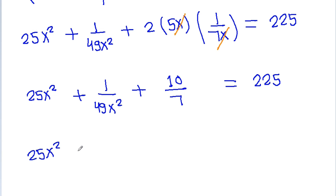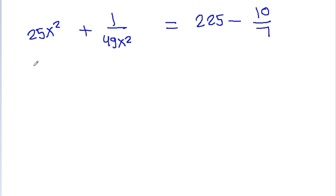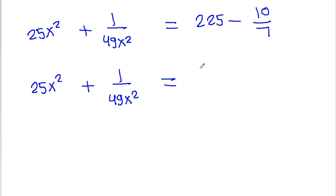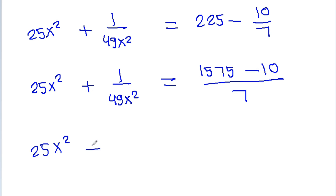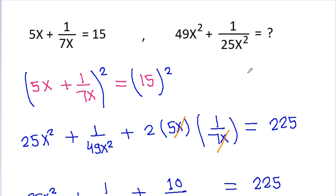So we get 25x square plus 1 by 49x square is equal to 225 minus 10 by 7, which gives us 25x square plus 1 by 49x square is equal to 1565 by 7. Now we have to find the value of 49x square plus 1 by 25x square.